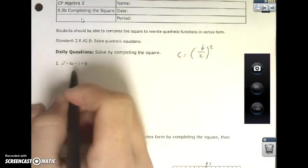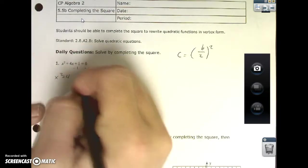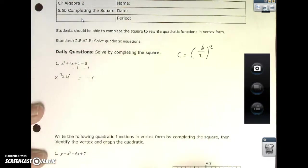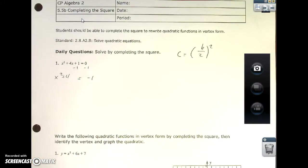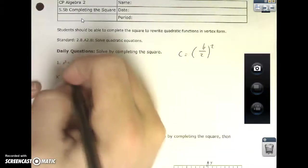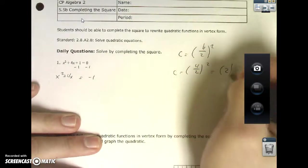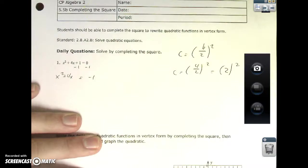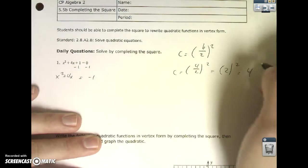Over here, number one. So, I need to get my x squared and my 4x by itself. So, I'm going to subtract one over, leave a little space, equals negative one. Now, I'm going to use my equation, C equals B divided by 2 to the quantity squared. My B is four, so four over two to the quantity squared, and we reduce it down. And then 2 squared gives me 4.